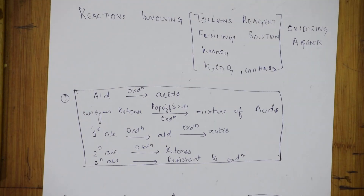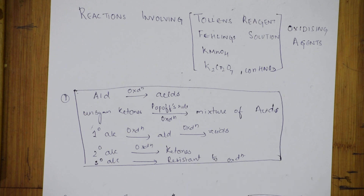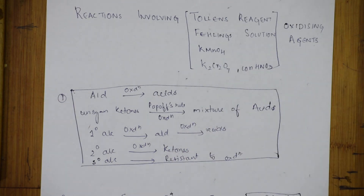Let's come back and start with Day 3 reactions. We have completed Day 1 and Day 2. In Day 3 reactions, I'll be dealing with aldehydes, ketones, and some miscellaneous reactions left out in your NCERT. Let's start with the first topic: reactions involving Tollens reagent, Fehling solution, KMnO4, potassium dichromate, and concentrated nitric acid. All these are oxidizing agents.